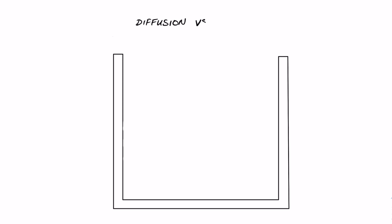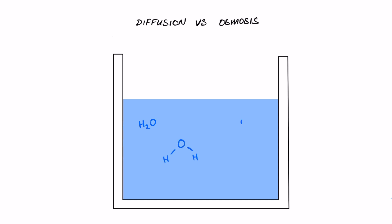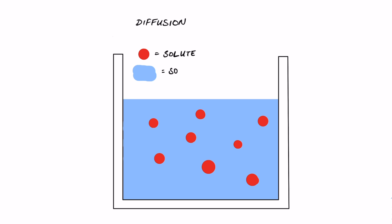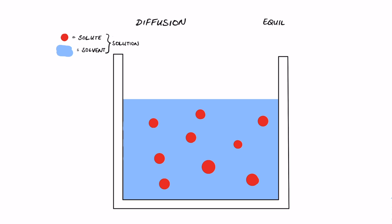We're going to talk about diffusion and osmosis — what they are, what's similar, and what's different. I've drawn a container filled with blue, which represents water — essentially lots of H2O molecules. I've also drawn red dots, which represent the particles or molecules suspended within that water. Those are our solute. The water itself is the solvent, and together the solute and solvent form a solution.